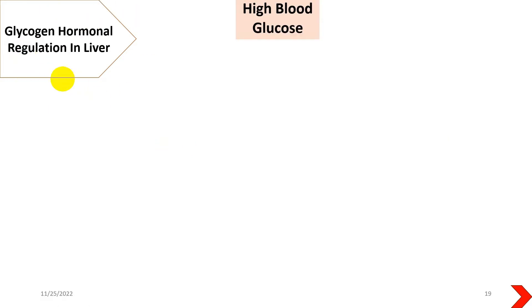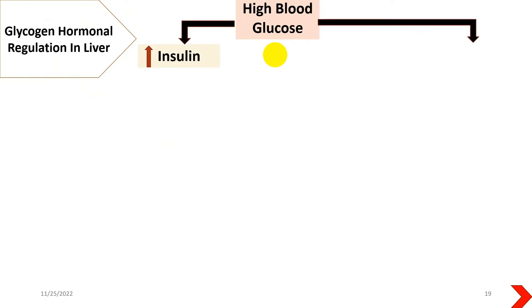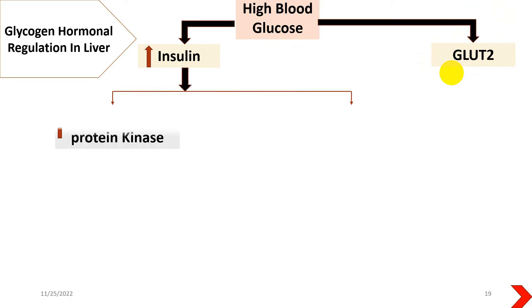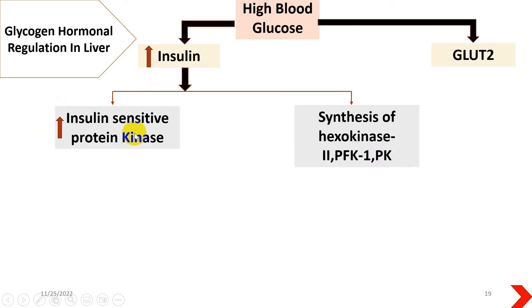The second mechanism is glycogen regulation by hormonal process. In the liver, if there is a high glucose level in the blood — for example, after a meal — that increased blood glucose will result in increased insulin secretion from the pancreas and increased expression of glucose transporters. Insulin will enhance insulin-sensitive protein kinase, causing overexpression of these enzymes and increased synthesis of hexokinase, phosphofructokinase-1, and pyruvate kinase — the three main regulatory enzymes of glycolysis.